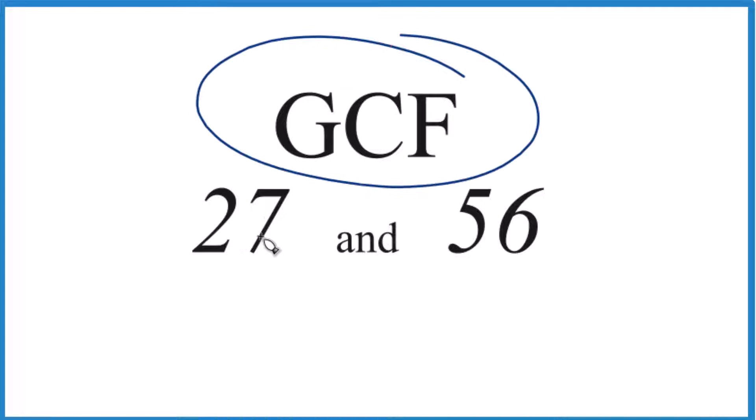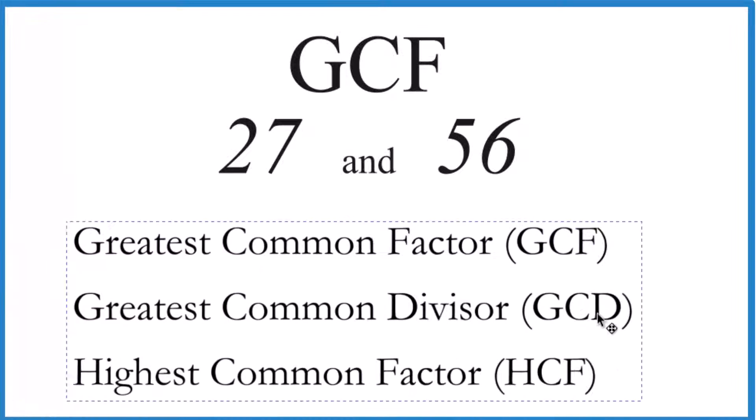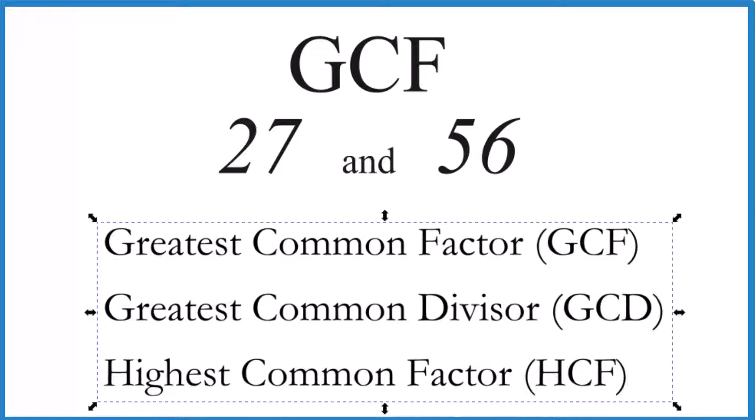Let's find the greatest common factor between 27 and 56. The greatest common factor—sometimes you'll see it called the greatest common divisor or highest common factor—any of these work, they're the same thing.